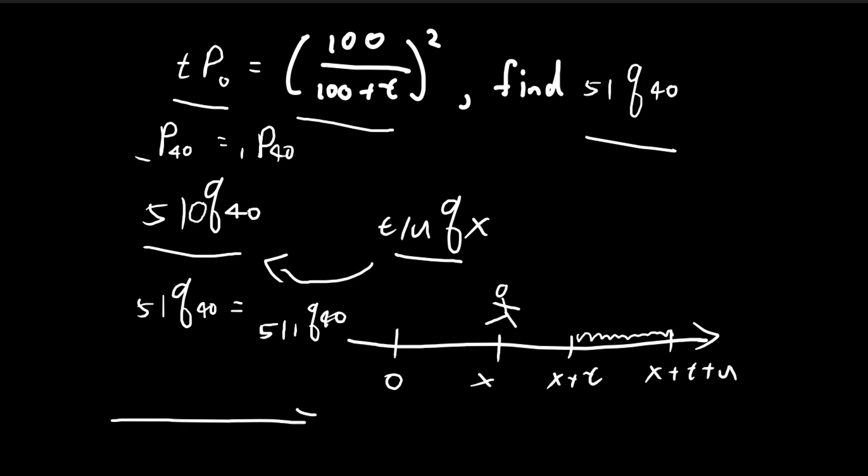What this means is that we are currently age 40, and we want to find the probability that we will die within this period. So this is what this symbol means.